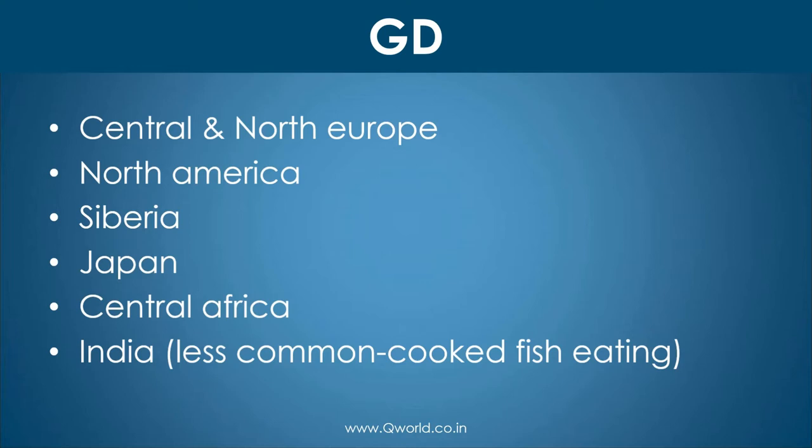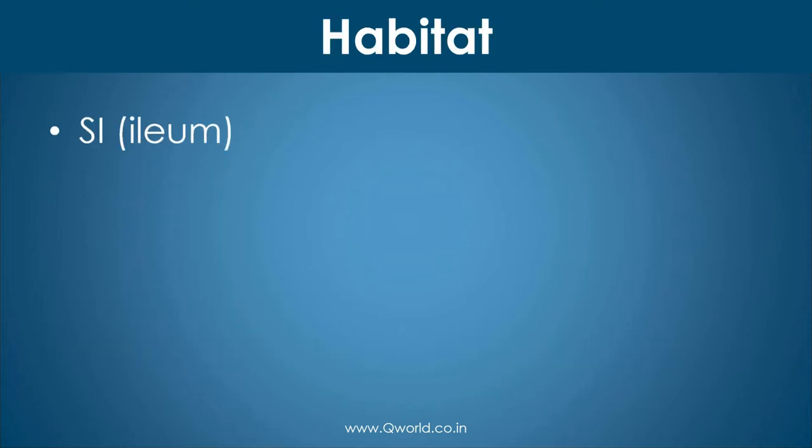Geographical distribution: it is located in Central and North Europe, North America, Siberia, Japan, Central Africa, as well as in India. But in India it is less common because of the habit of eating cooked fish. The habitat is the small intestine, especially the ileum.